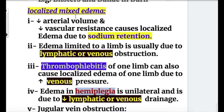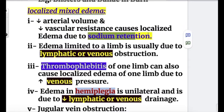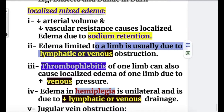Localized mixed edema may be pitting or non-pitting. Number one: decreased arterial volume and decreased vascular resistance — vasodilation causes localized edema due to sodium retention. Number two: edema limited to a limb is usually due to lymphatic or venous obstruction.